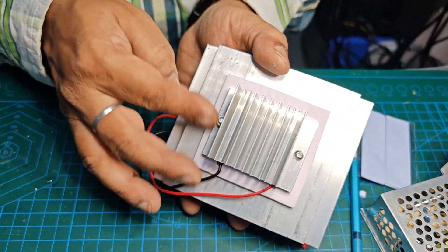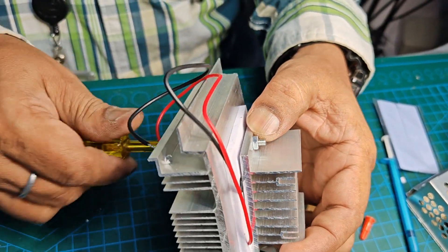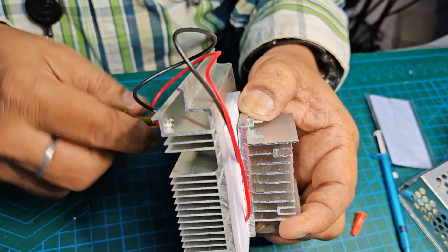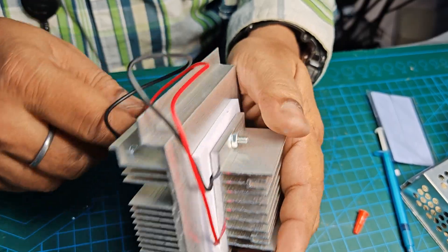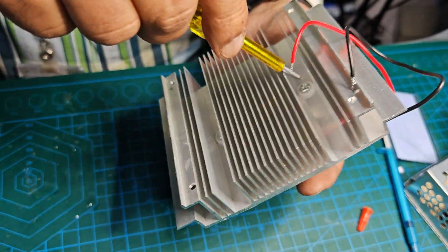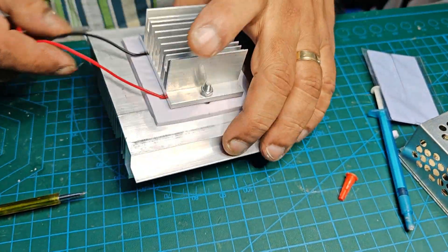So this is how you can fit a Peltier. Tighten it properly. There should not be any air gap between the Peltier sensor and heat sink. So this is how we have fitted the Peltier between the two heat sinks.